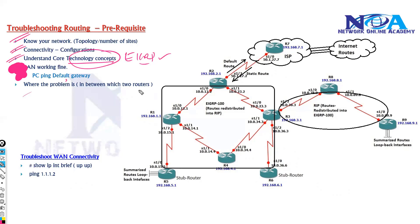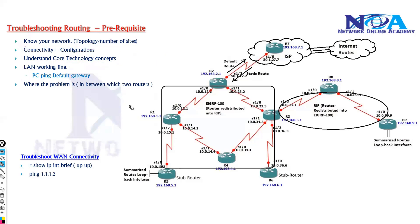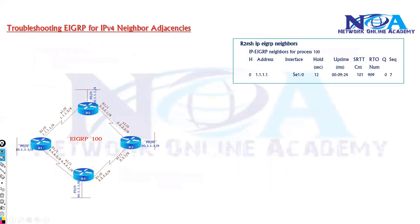We also need to identify where exactly the problem is. We are assuming there is no problem with the WAN or LAN connectivity and that we know all this background information. So let's get started with troubleshooting EIGRP neighbor adjacency. There are plenty of reasons for EIGRP neighborship not establishing.